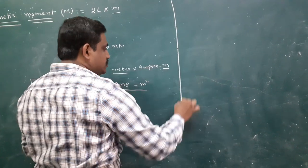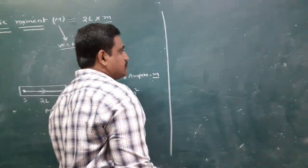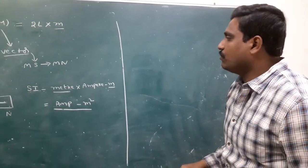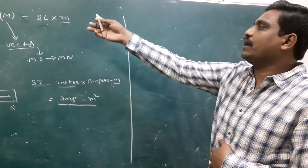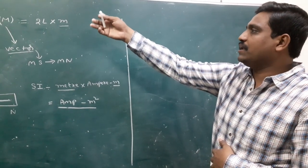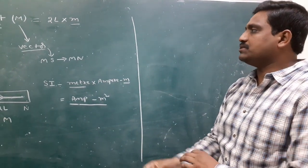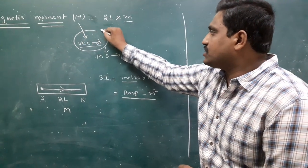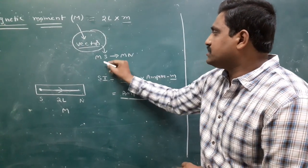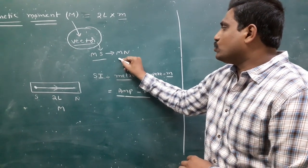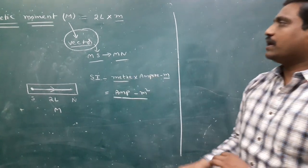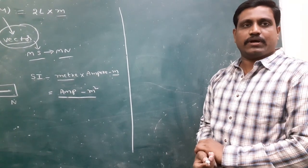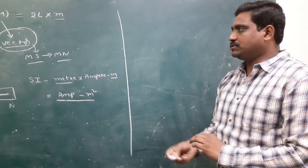Next I discuss some problems on magnetic moment. One important point I repeat again: magnetic moment is a vector, and its direction is always from magnetic south to magnetic north. Keep this in mind to solve the problems.